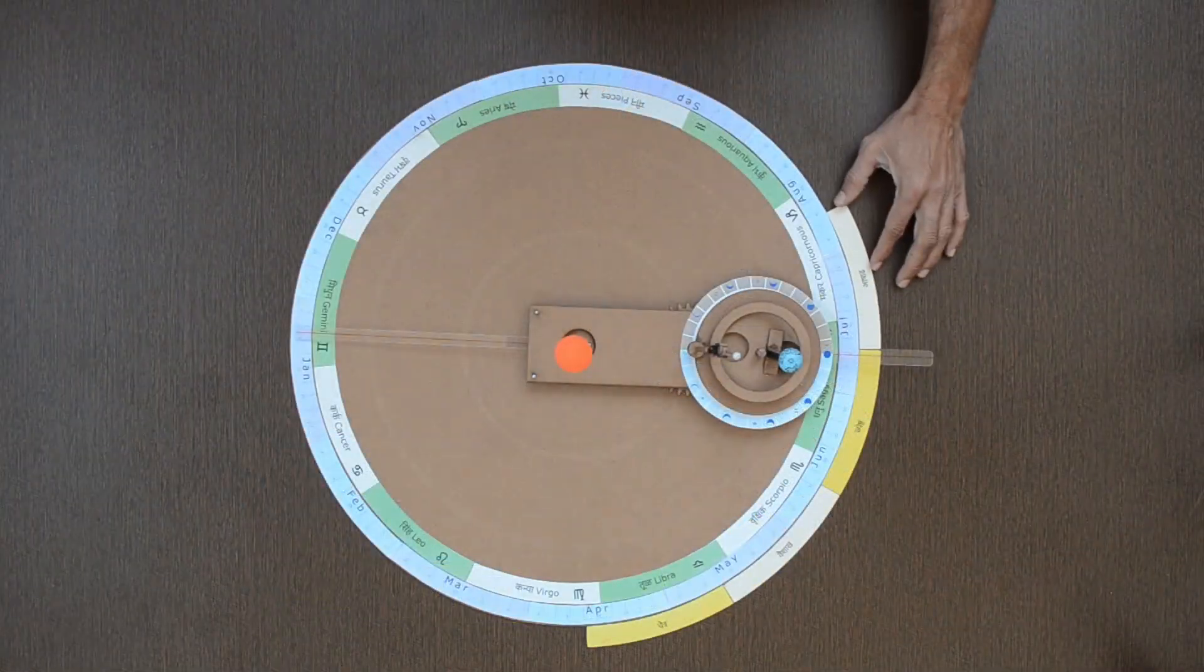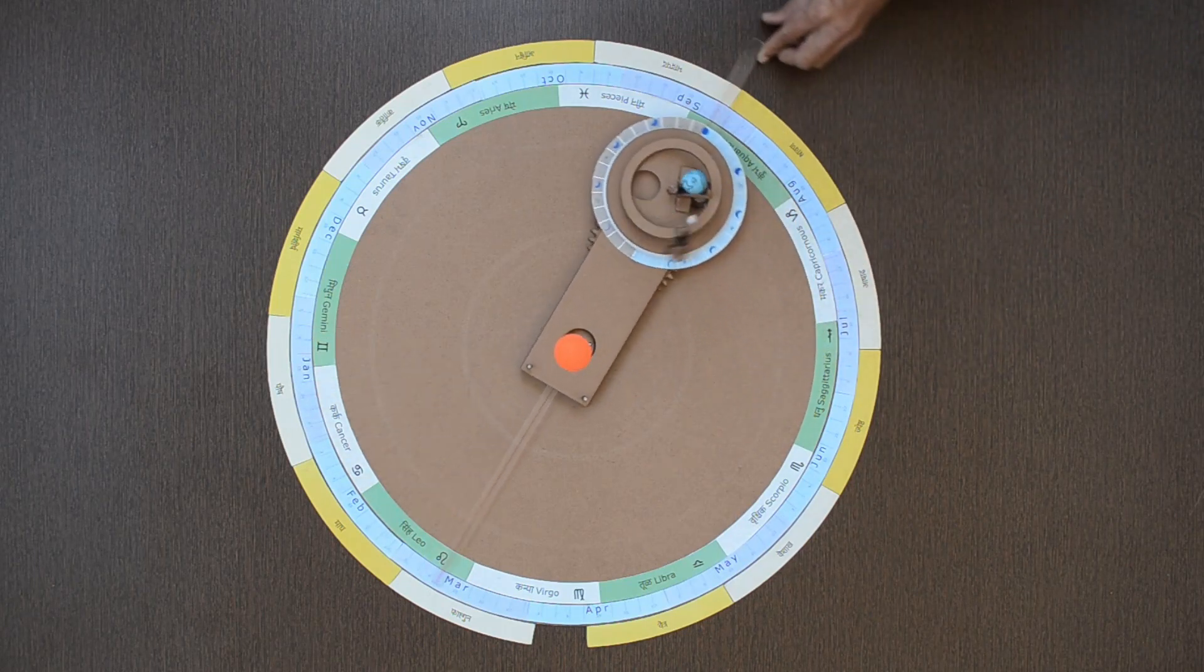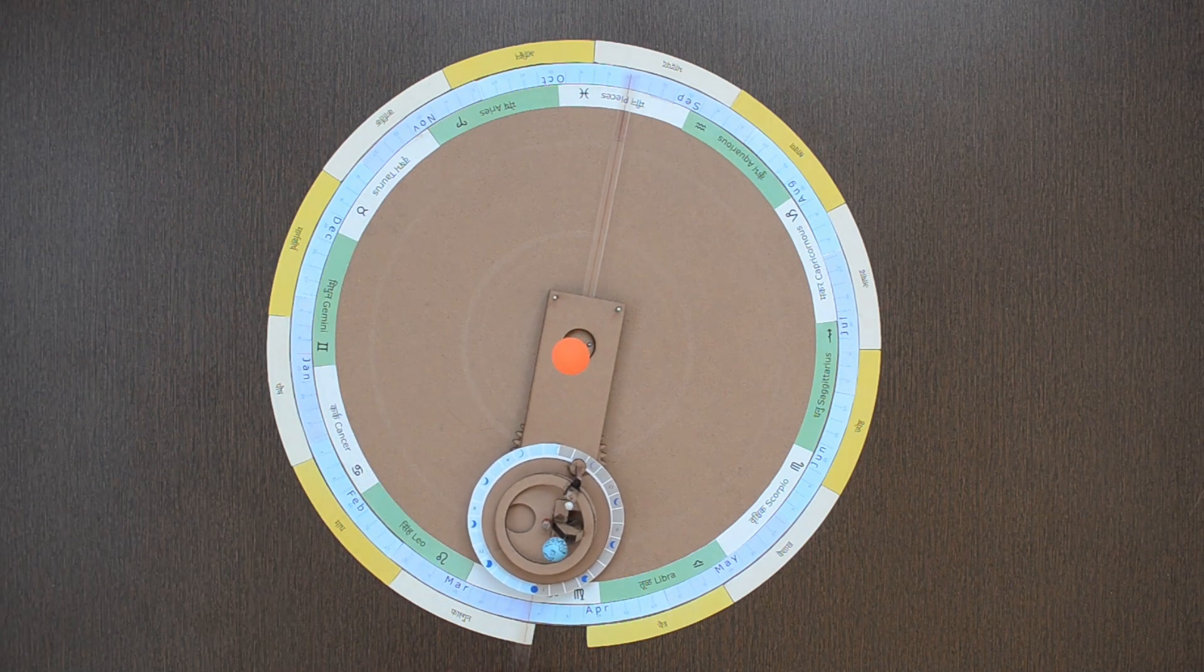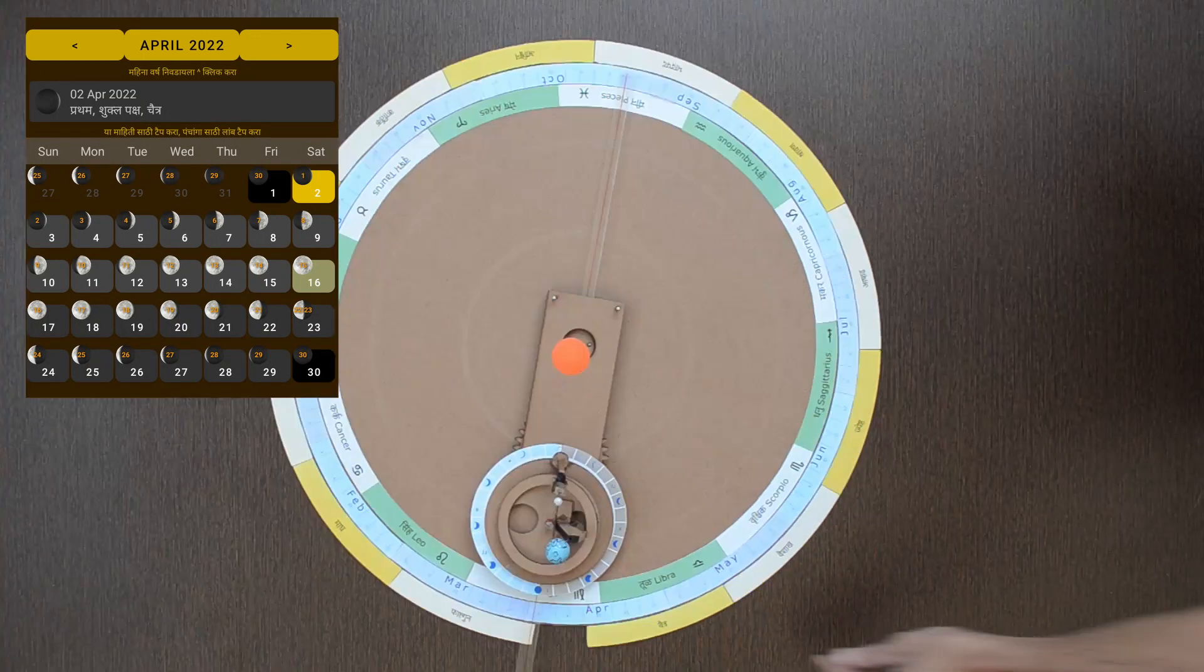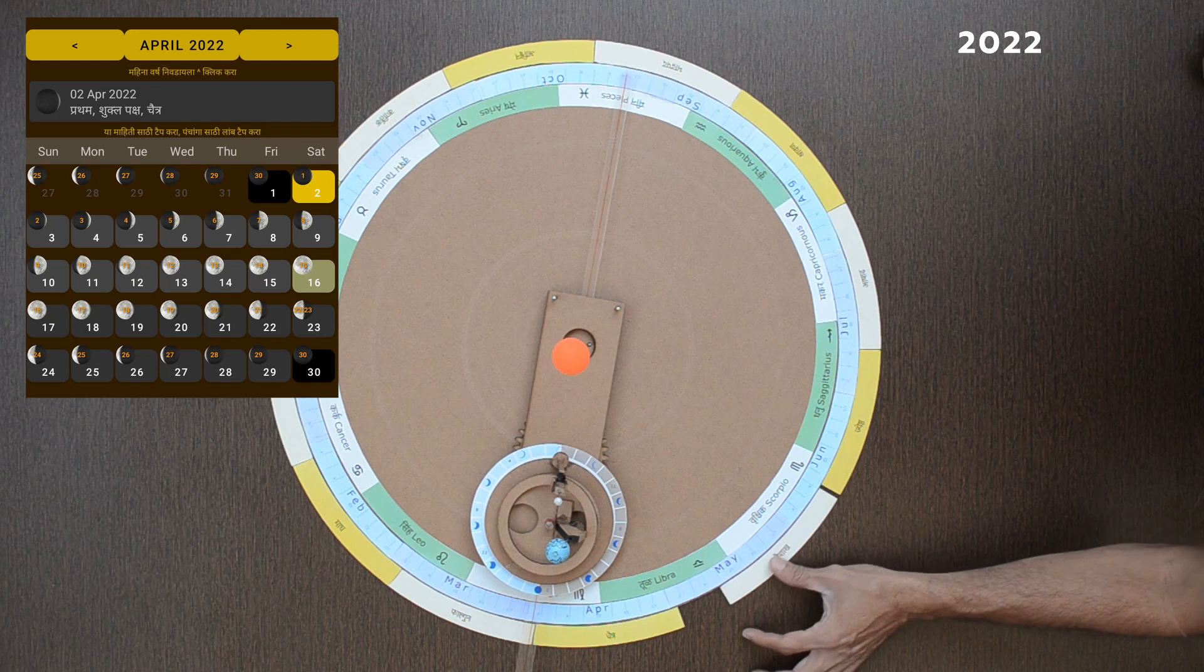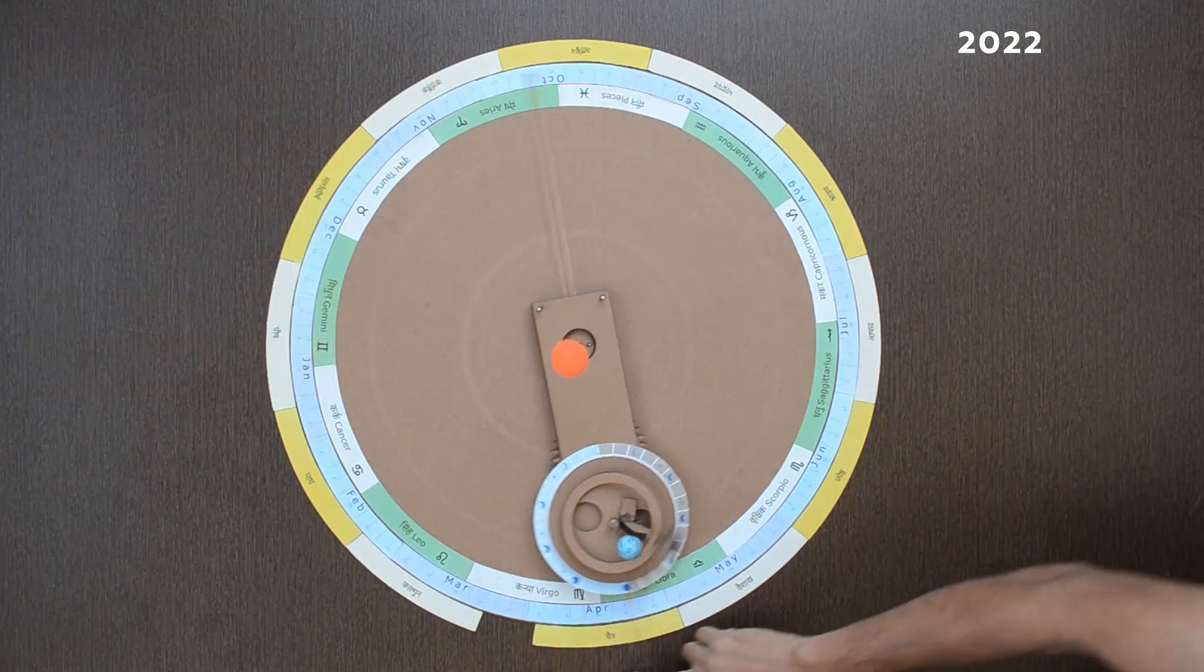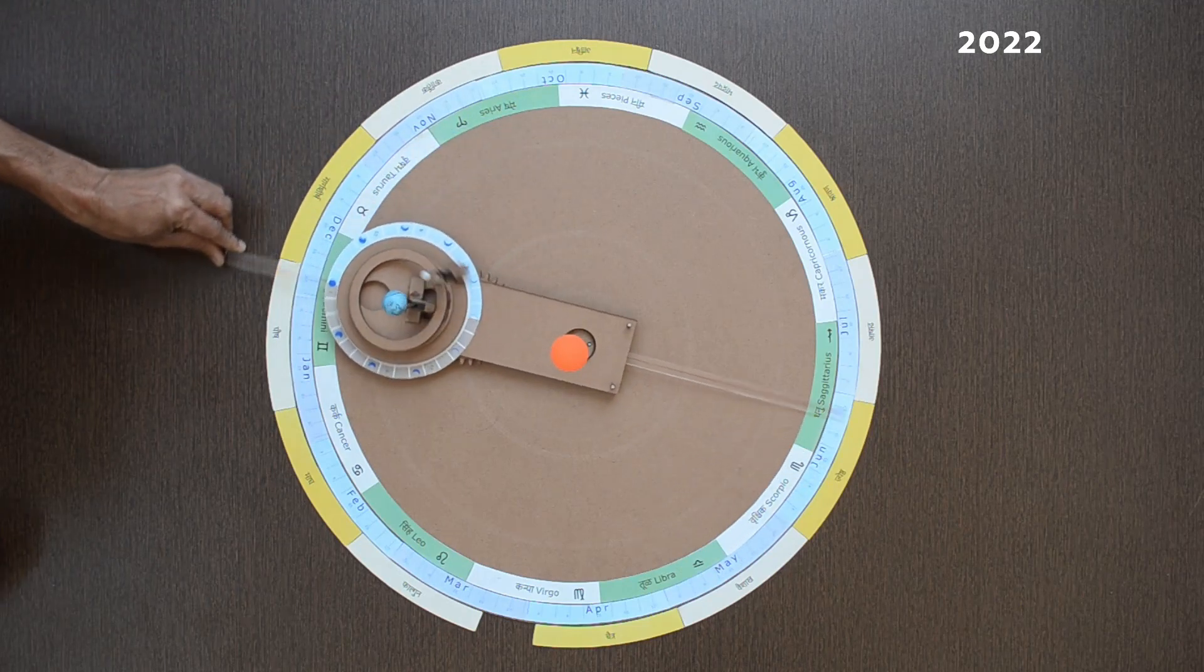12 revolutions of the moon mark the completion of one year in Hindu calendar. First month of next year, Chaitra, starts from this position again. In year 2022, Chaitra starts on 2nd April, almost 11 days in advance than the previous year. This is because each month is only 29.5 days approximately.